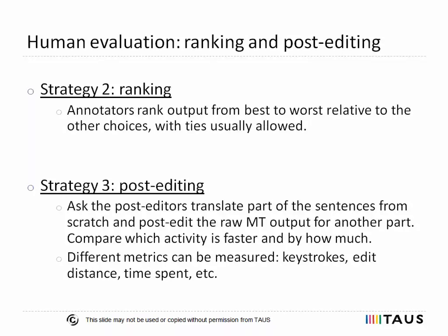Another approach that has been gaining popularity in industry and academia is the ranking of sentences. This is a quick and easy way to compare the output of different engines at the same time. Annotators have to rank the same output sentences from best to worst, relative to the other choices, with ties usually allowed. Research has shown that this approach yields greater agreement among annotators than adequacy-fluency. On the negative side, rankings do not provide any information about the translation for further analysis.